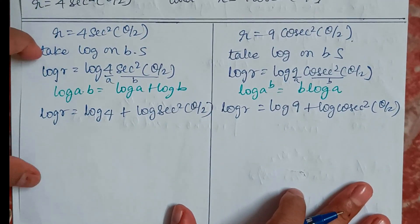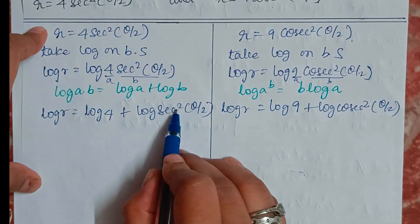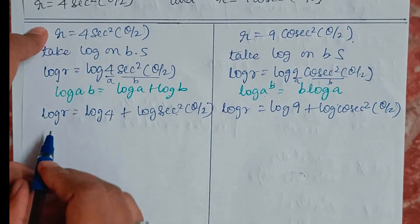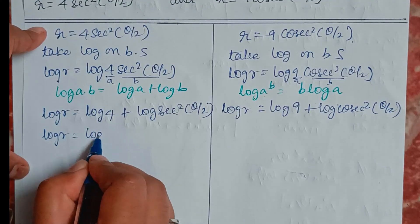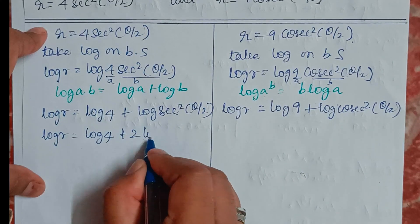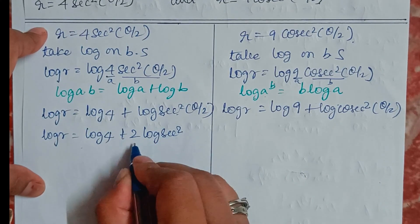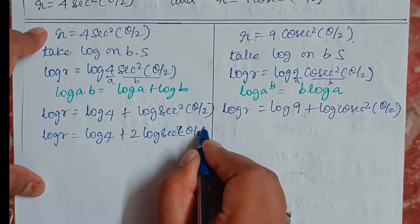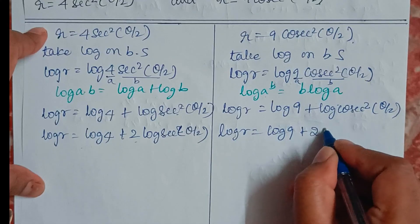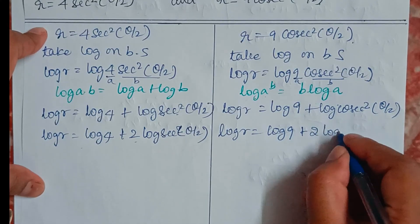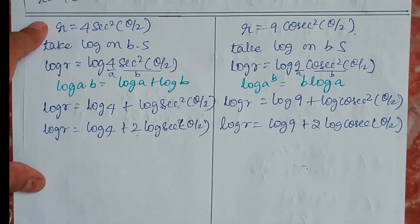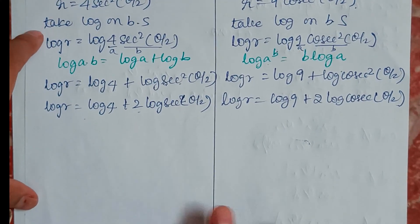Now applying the formula log(A^B) = B·log A, we expand further: log R = log 4 + 2·log sec(θ/2) for the first curve, and log R = log 9 + 2·log csc(θ/2) for the second curve. The expansion is done.